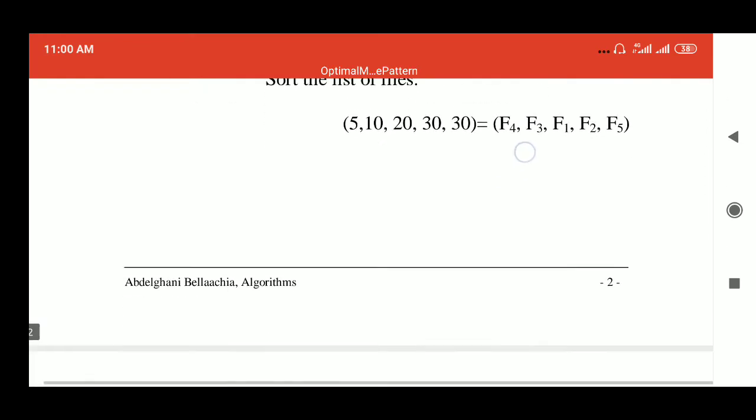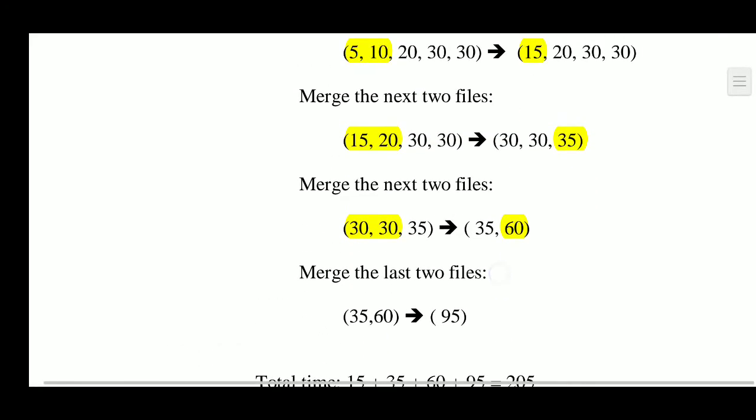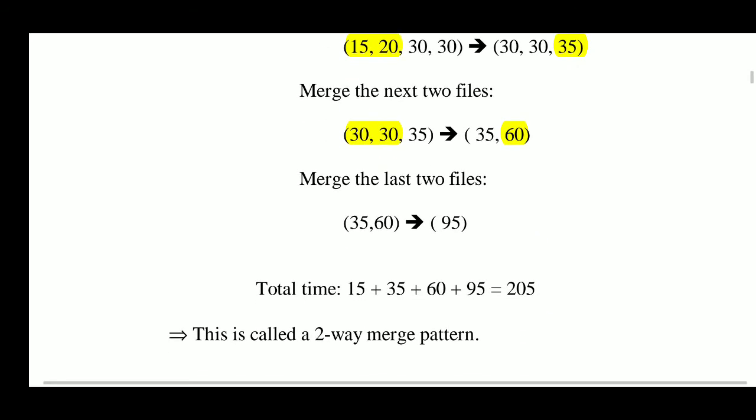We choose F2 and F5, both having 30 elements, and merge them. Then the resultant of the last pass (35) is merged with the resultant of the current pass (60), giving 35 + 60 = 95.